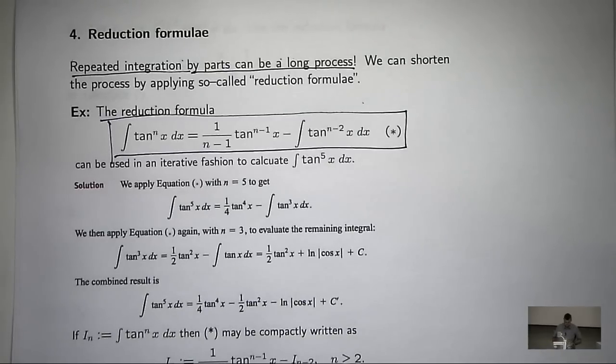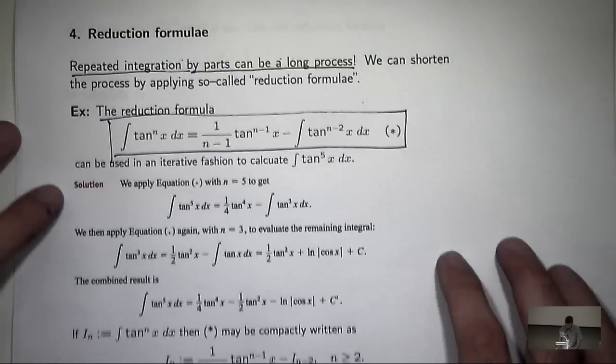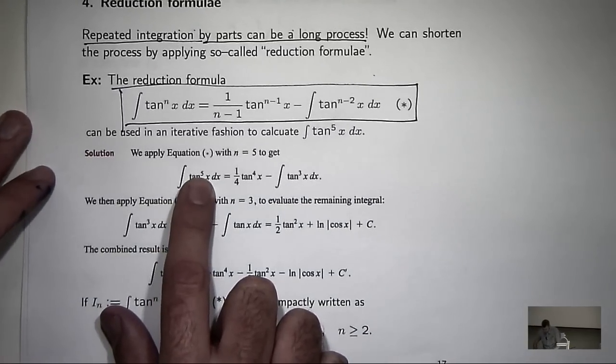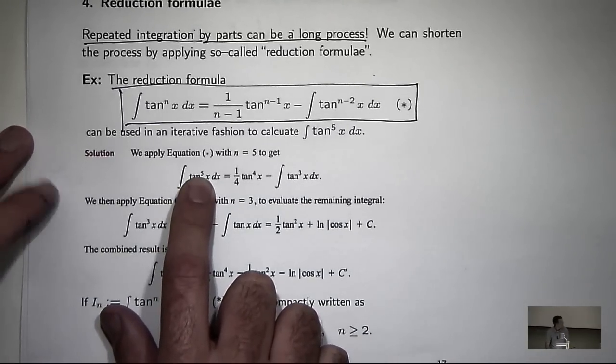So you can see, in this example, you're asked to calculate tan x to the power 5. You wouldn't want to do that by parts.